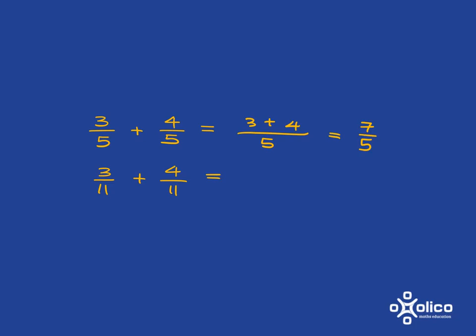Similarly, for 3 over 11 plus 4 over 11, you've already got a common denominator, so you can just say 3 plus 4 over 11 and you get your answer of 7 over 11. Now we can use algebra to show this general pattern.